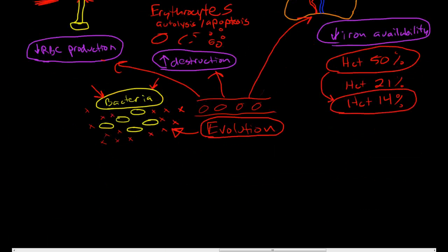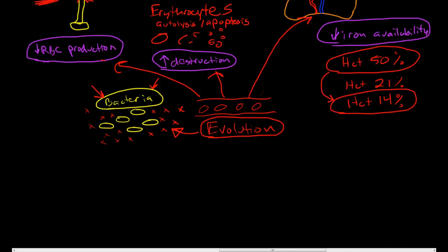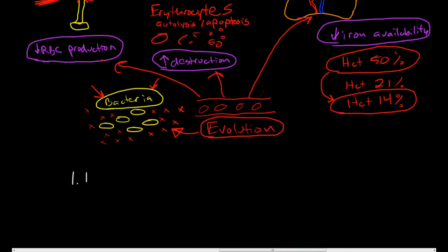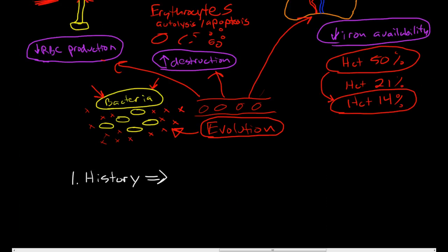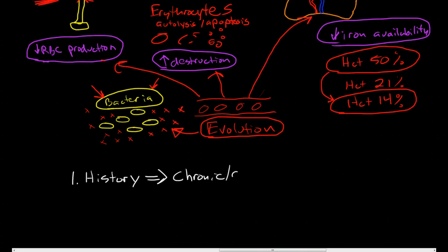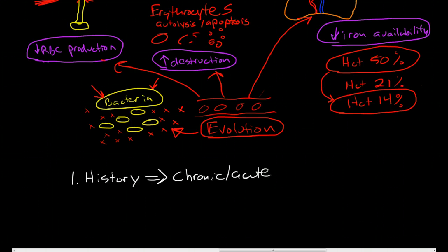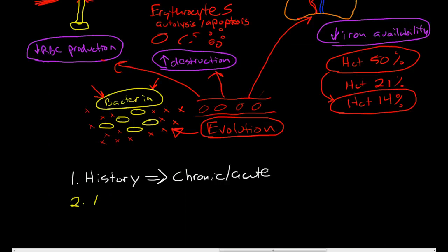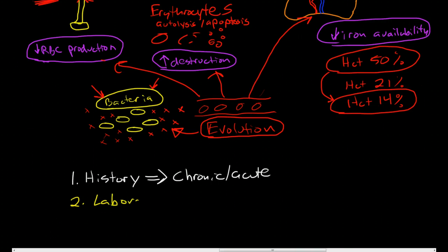So how do you diagnose this? Well, number one is you think about the history, because the history leads you to your diagnosis about 90% of the time. So is the history consistent with chronic or acute inflammation? Number two, you want to do some laboratory studies.